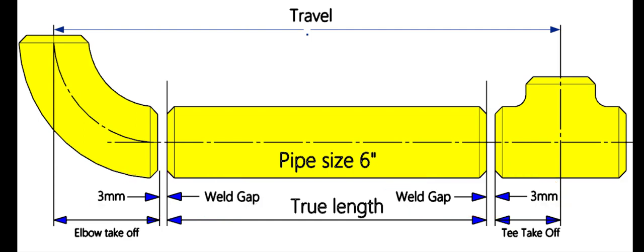The travel length is given in the drawing, and the standard weld gap is three millimeters. If the fittings are available, we can measure the takeoff physically. If you don't have the fittings, you need a pipe fittings dimensional chart like this one.